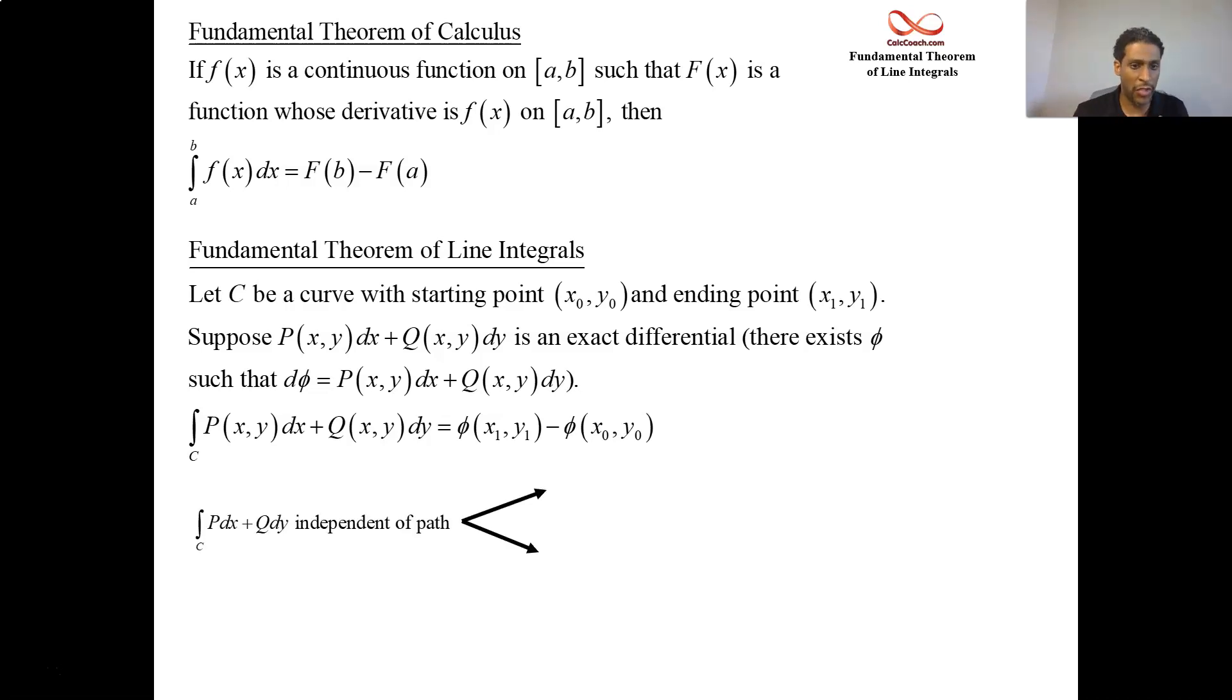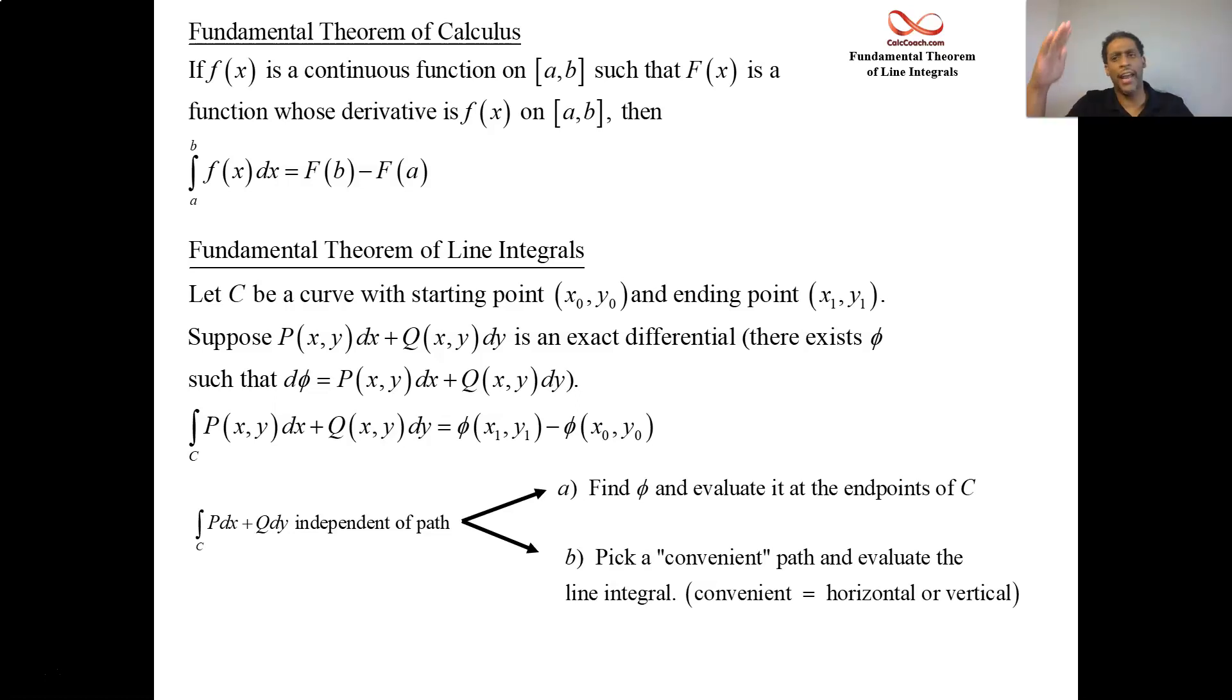So when you're independent of path, you have two options. You go out and find out what phi is and evaluate it at the endpoints. Or independence of path means that you could pick any path. You could be given the path, but you could pick any path you want, because it'll be true no matter what path you're on. So you want to pick something that's convenient, pick something that is horizontal or vertical.